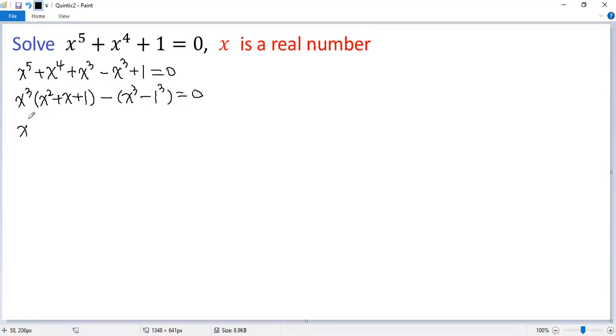So x cubed times x squared plus x plus 1, we use difference of cubes formula. So we get x minus 1 times x squared plus x plus 1 equals 0.